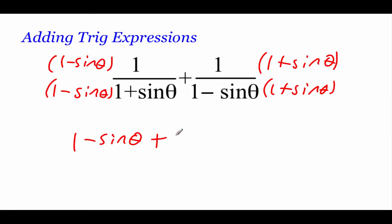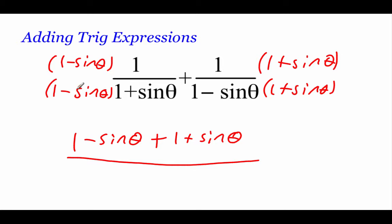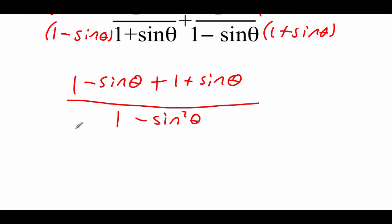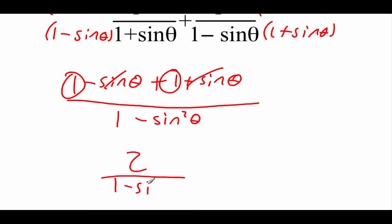We've got our plus sine term: 1 times 1 is still 1, and 1 times the sine of theta is a positive sine of theta. On bottom, this is going to be a difference of squares, so 1 times 1 is 1, and negative sine times positive sine gives us a negative sine squared of theta — so we're left with 1 minus the sine squared on bottom. Combining like terms on top: 1 plus 1 is 2, and the negative sine of theta cancels with the positive sine of theta, giving us 2 over 1 minus sine squared.